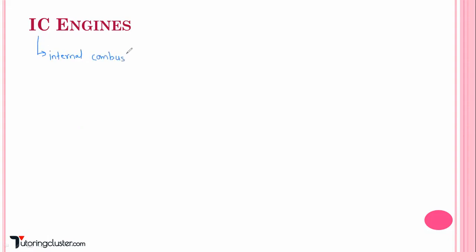IC stands for internal combustion — so these are internal combustion engines. Why are these called internal combustion engines? Because the combustion of fuel takes place inside the cylinder — that's why they are called internal combustion engines. Air is induced from the atmosphere, so this engine takes air from the atmosphere, and the combustion of fuel takes place inside the cylinder.